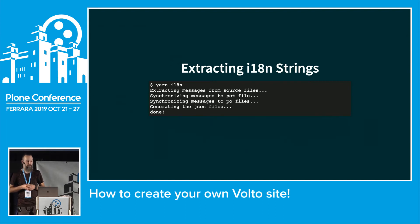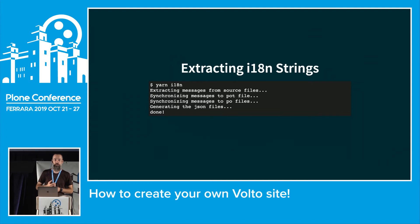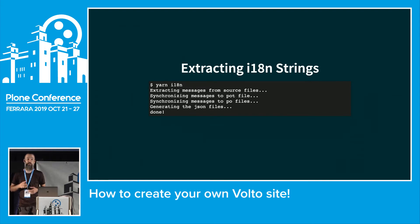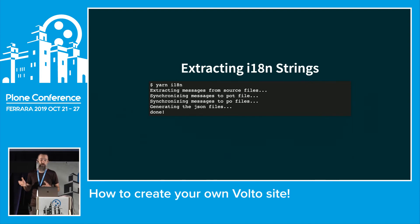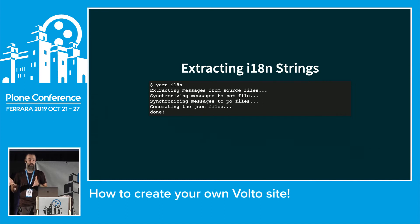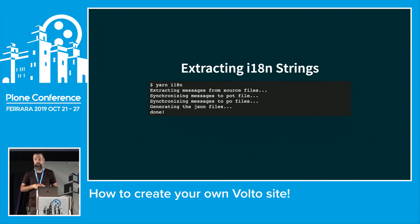I wrote a script in Volto to convert JSON data into a POT file so we can use our normal translation machinery. It syncs data to PO files, and the last step converts those translated PO files back into JSON for use in the UI. Translations come from two locations: the Volto package itself and your own package, and the script combines both.